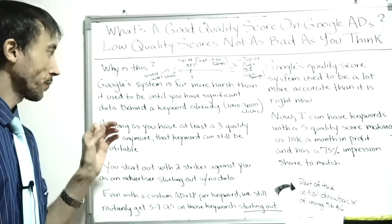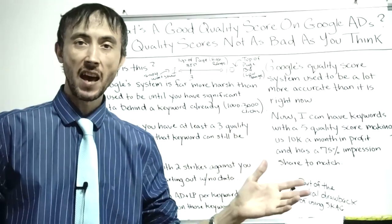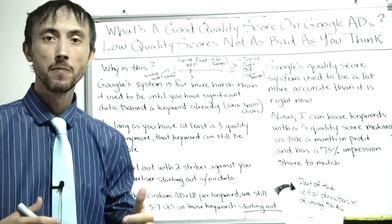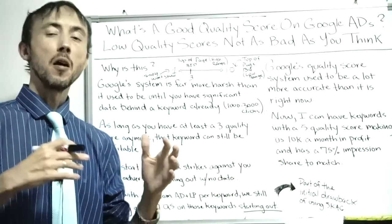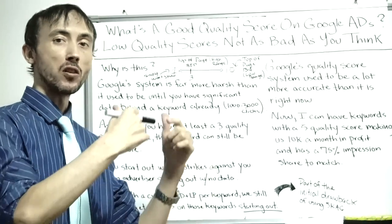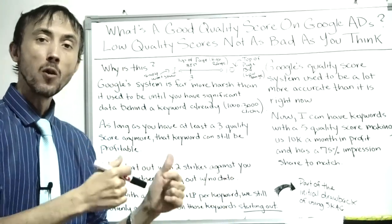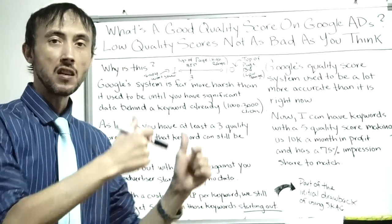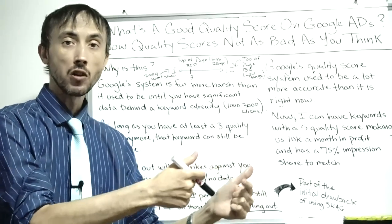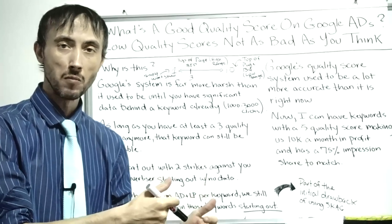There's a certain way that I set up my ads to be able to achieve a certain quality score. I'm going to explain the way that I set it up and the pros and cons of setting it up this way — the pros mainly being you'll make tons more money long term, but short term you're going to eat it a little bit.